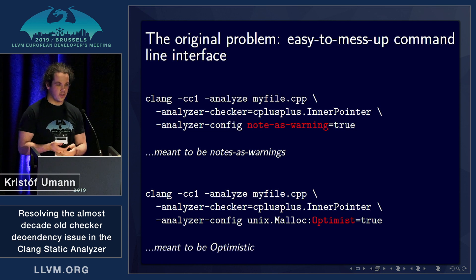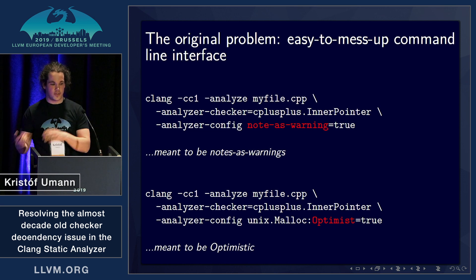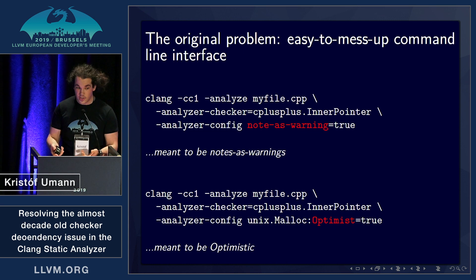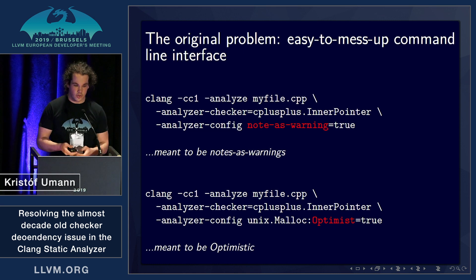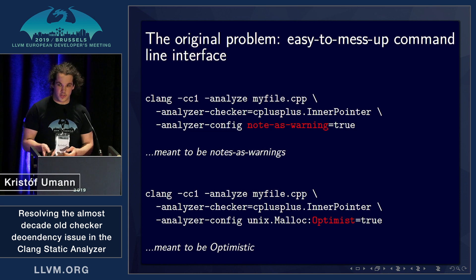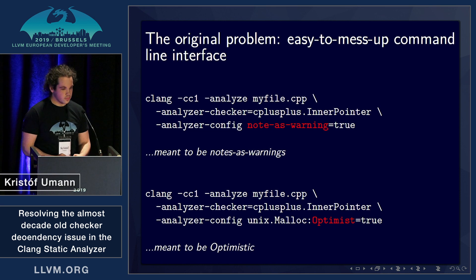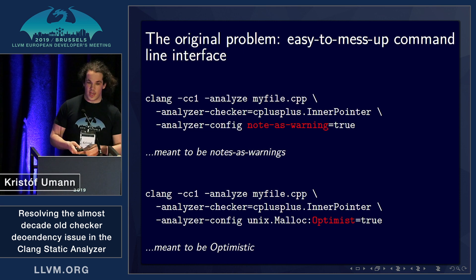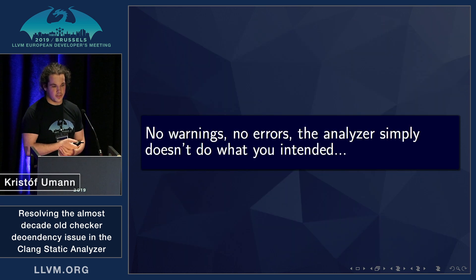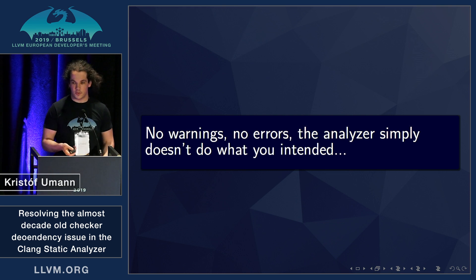In the first case, we configured the notes-as-warnings configuration to true, and in the second, we configured the specific checker unix.malloc with its optimistic configuration, and we set both of those to true. The problem here is that we messed up the invocation and got absolutely no feedback from the analyzer — no errors; it just simply didn't do what we wanted.